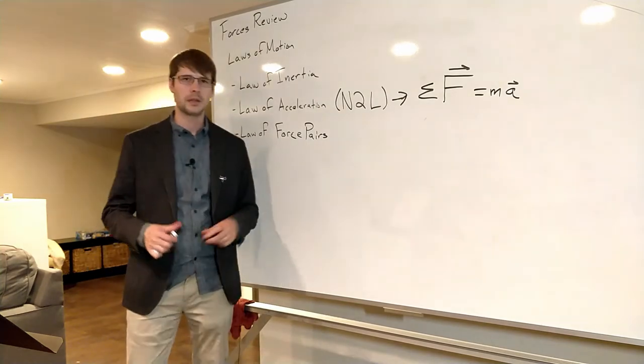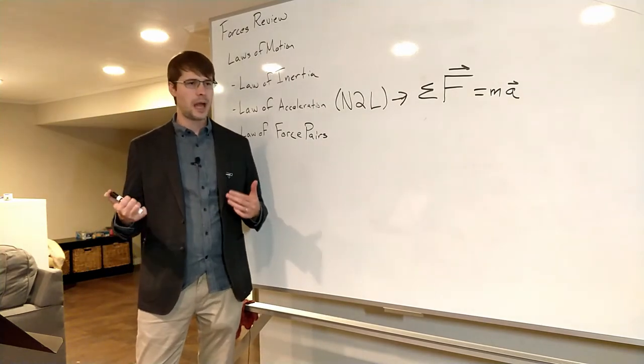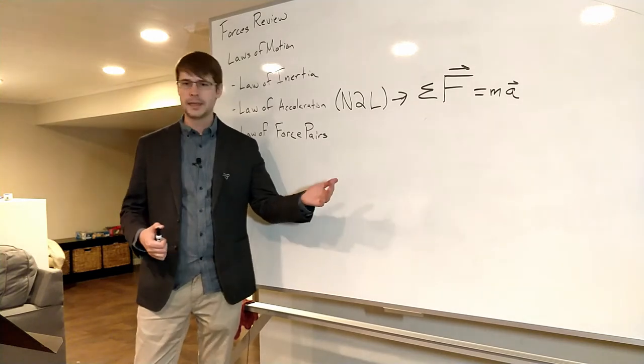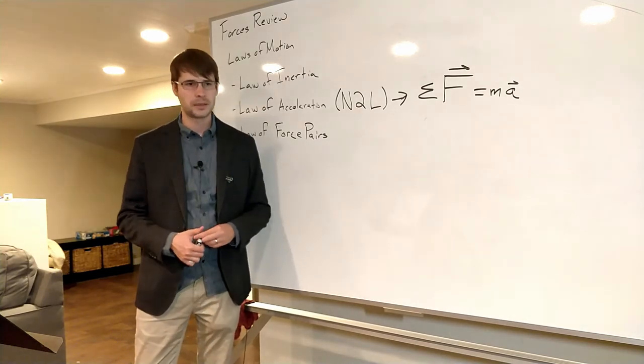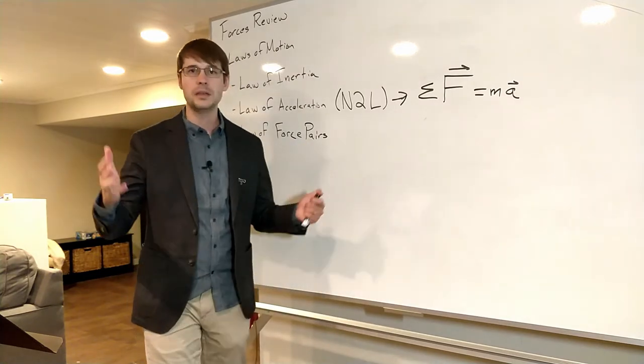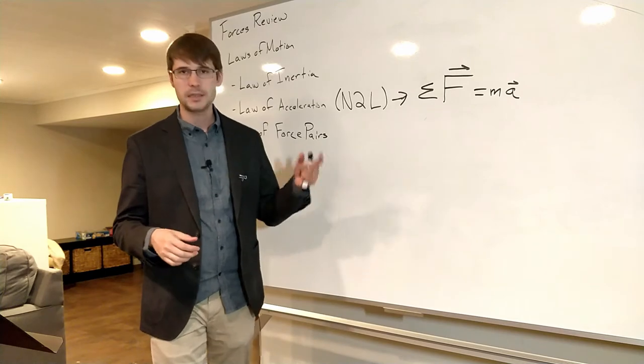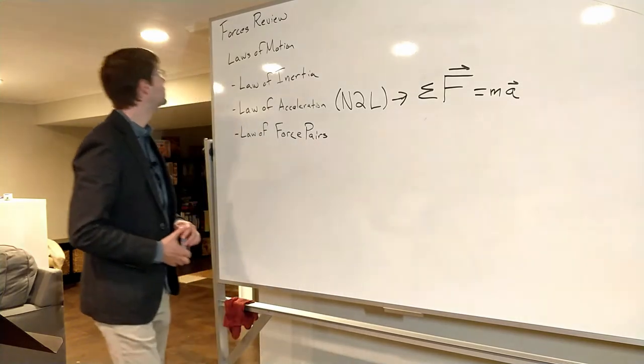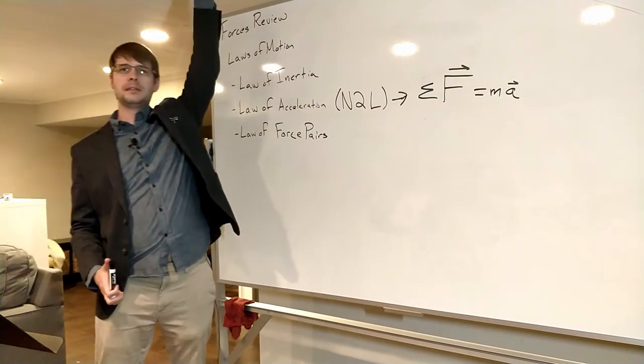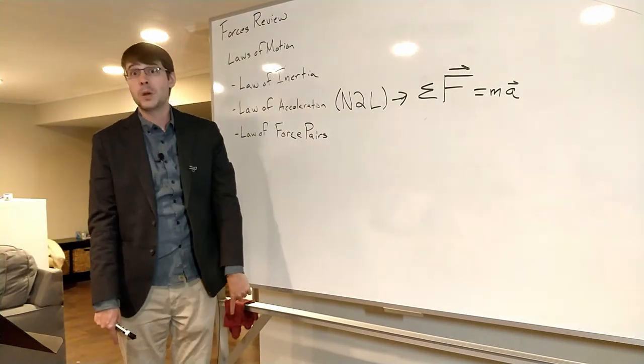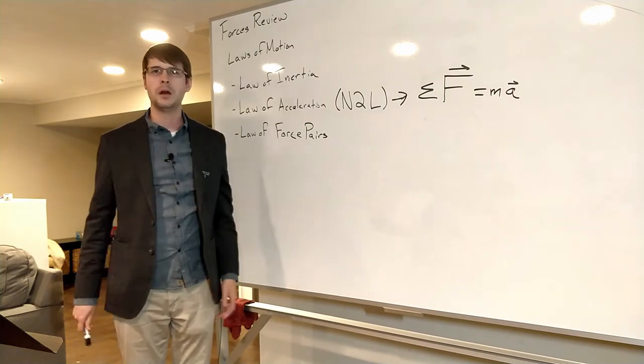Then our last one here is the law of force pairs. This tells you that if an object acts on another object, that second object acts back on the first object. So really the thing here is if I push on someone with 20 newtons of force, they must be pushing back on me the other direction with 20 newtons of force. If I push on the ceiling here upwards, the ceiling pushes down on me. If I push on the floor downwards like I am right now, the floor pushes up on me.